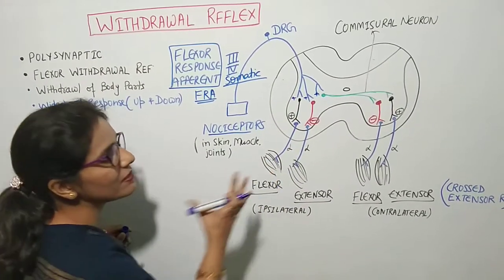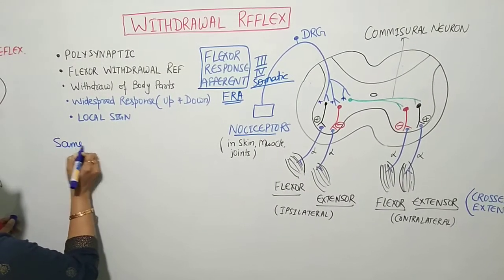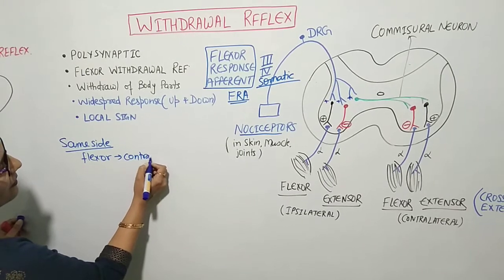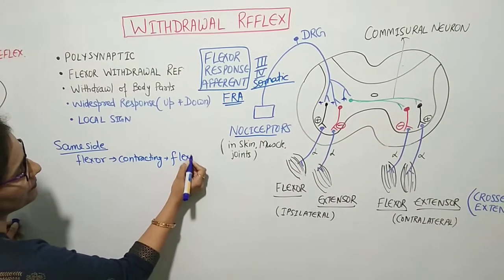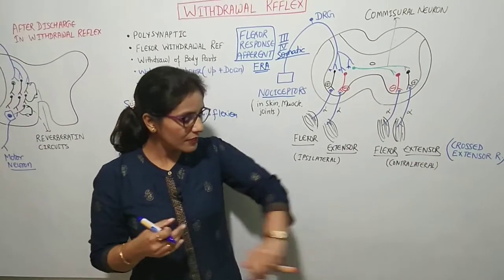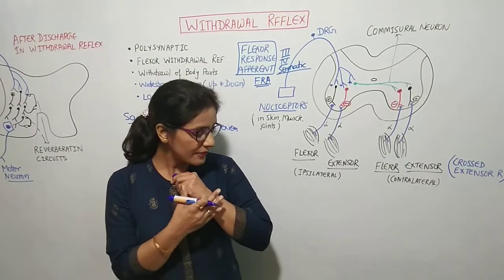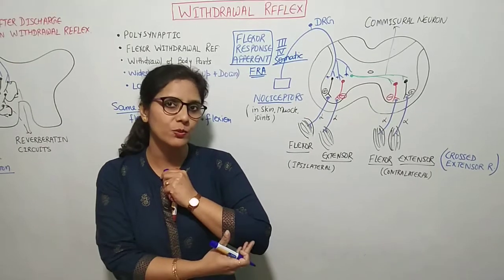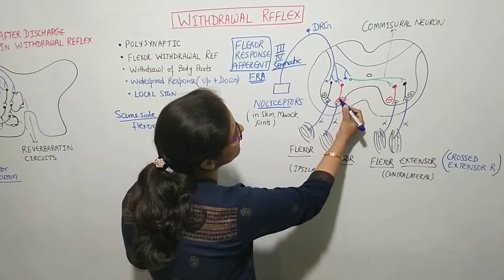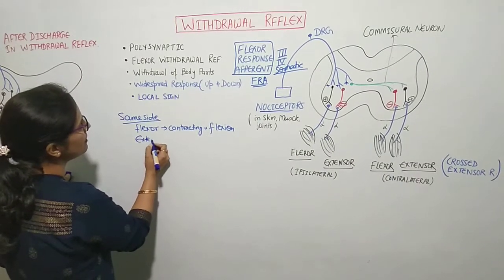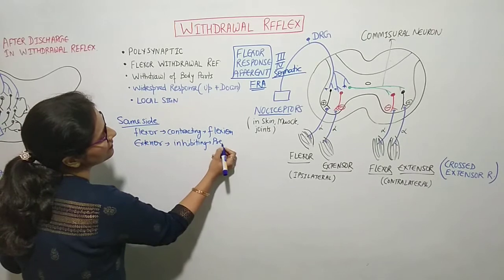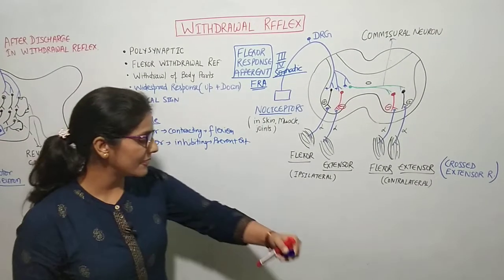The excitatory inter-neurons supply the alpha motor neurons of the flexor muscles on the same side. This causes the flexor muscles on the same side to contract, producing flexion. At the same time, inhibitory inter-neurons inhibit the extensor muscles on the same side, preventing extension so that flexion can occur.